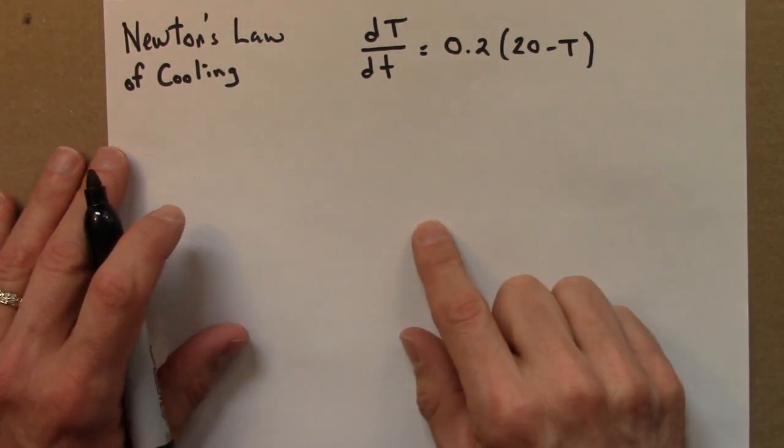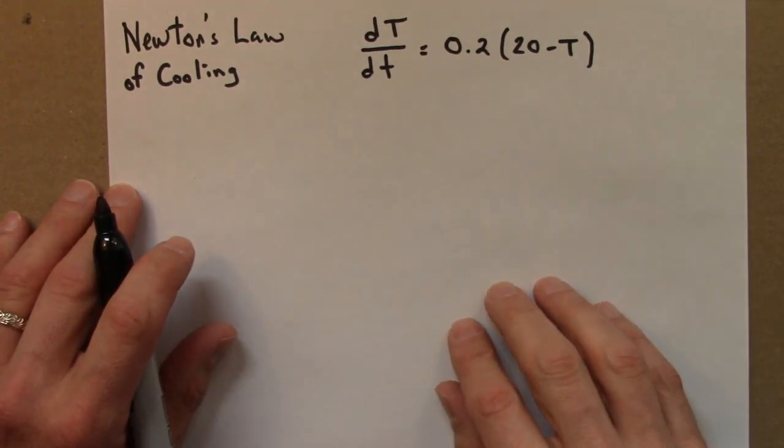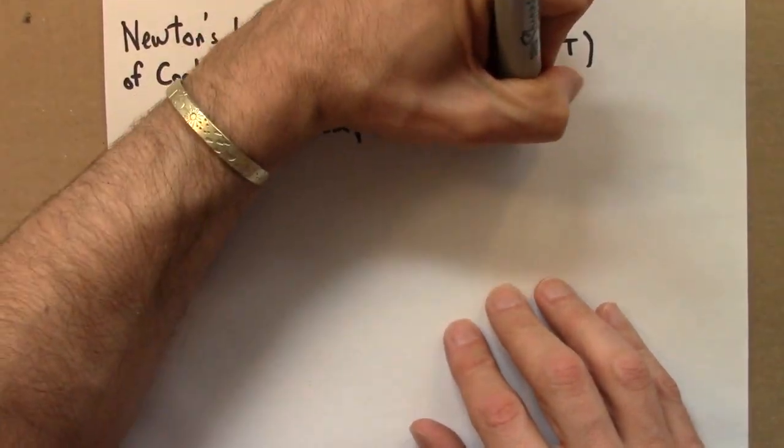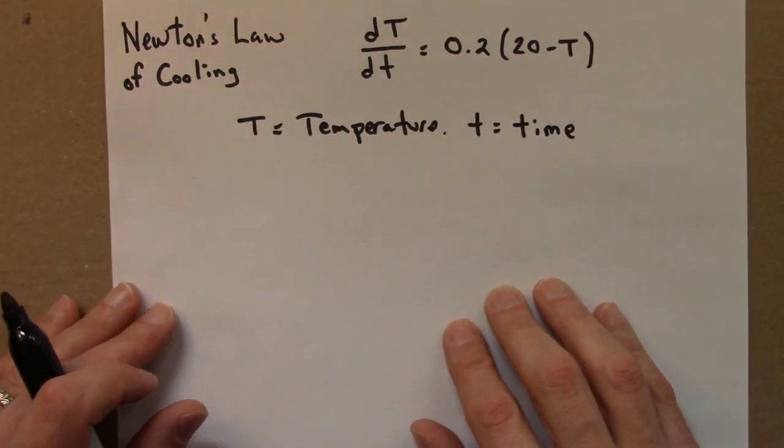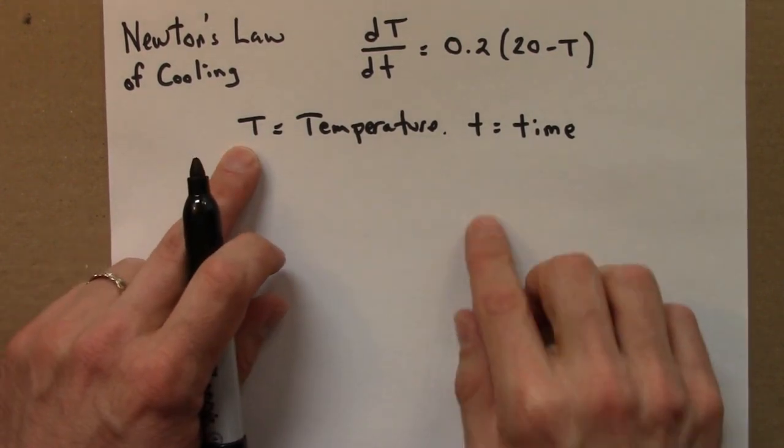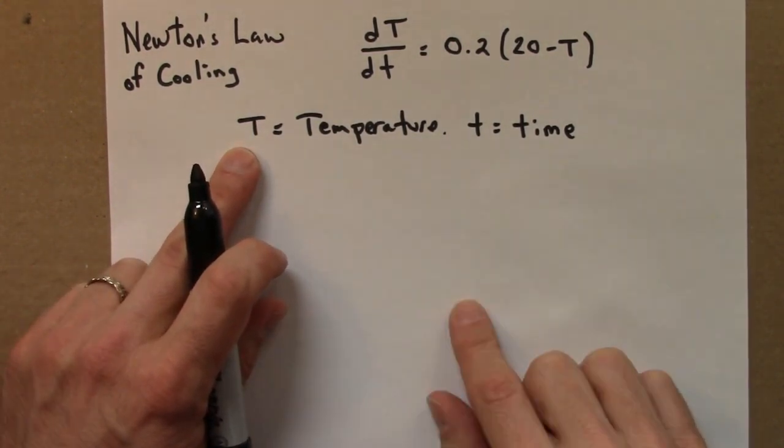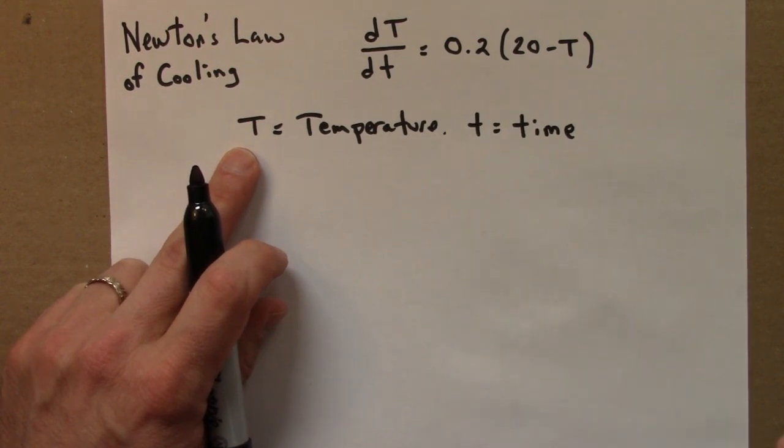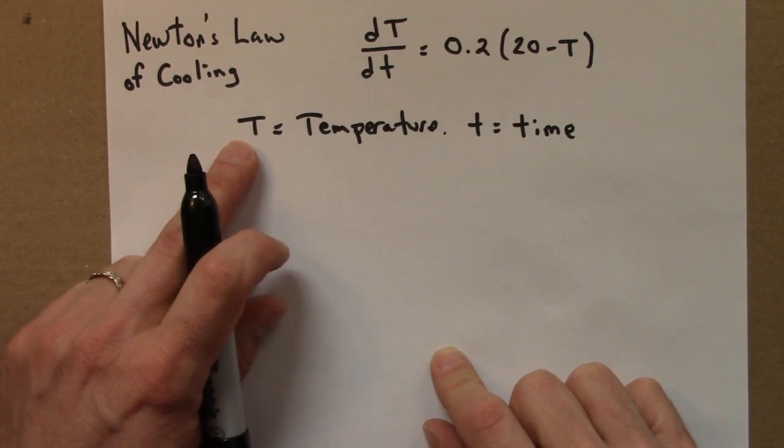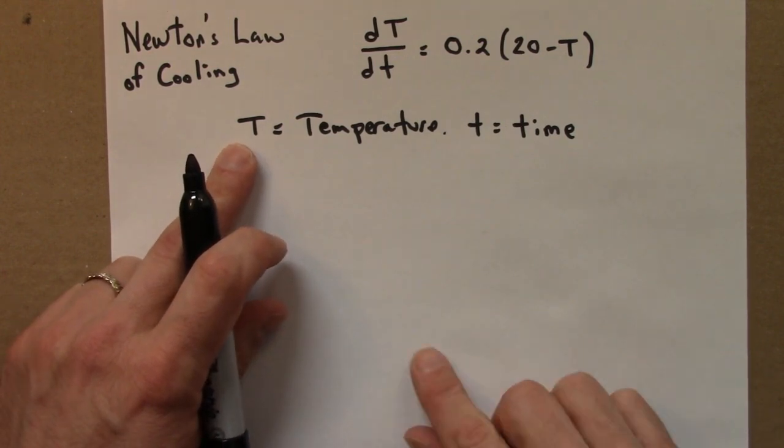Now in this equation, capital T is temperature and lowercase t is time. And we're interested in how capital T changes over time. So, given that the initial temperature of the beverage is 5 degrees, I would like to know what is the temperature at all other times.